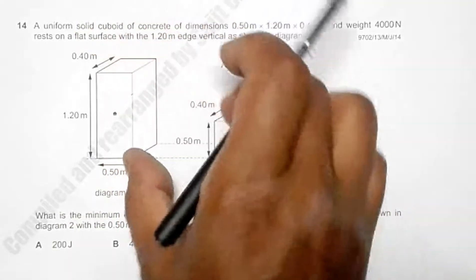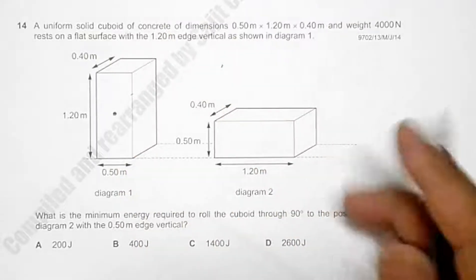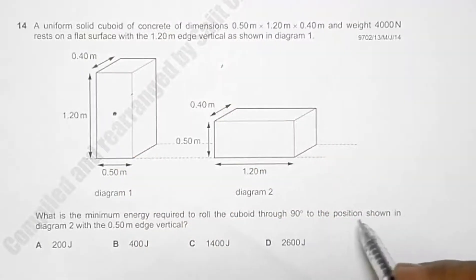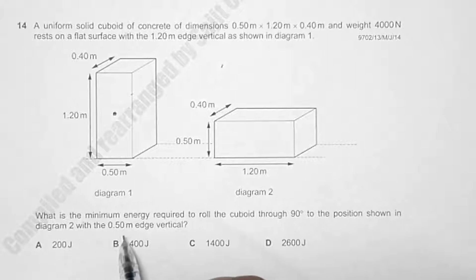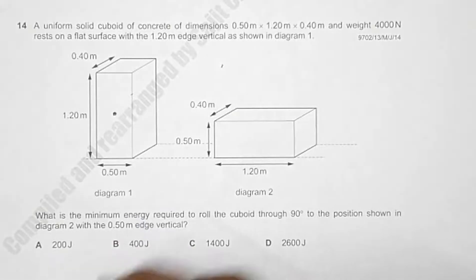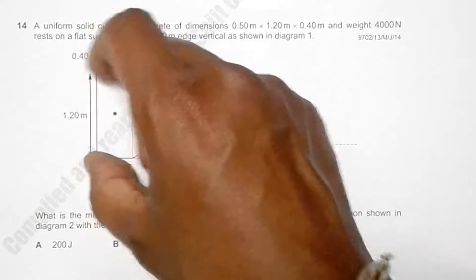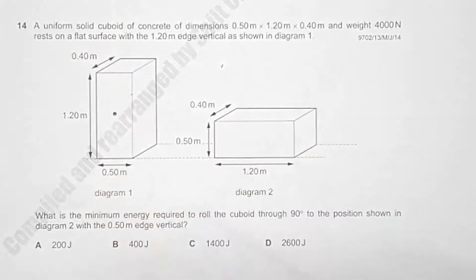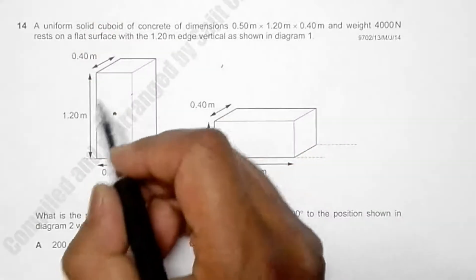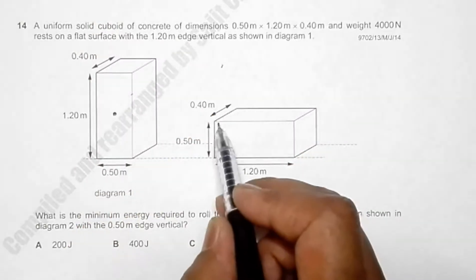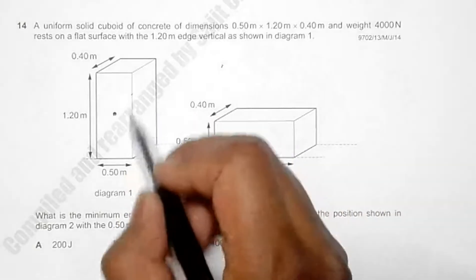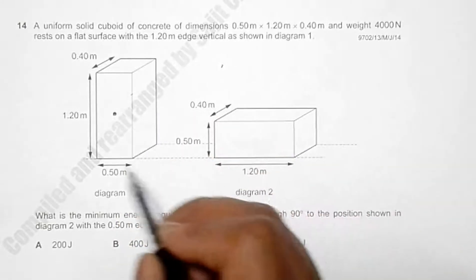We have to roll the cuboid through 90 degrees to the position shown in diagram 2, with the 0.50 meter side now vertical. So what was the tallest side becomes horizontal, and what was the shorter 0.50 meter side becomes vertical.